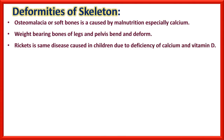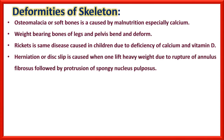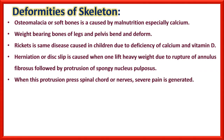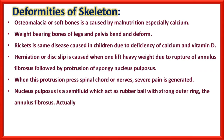Rickets is actually a type of osteomalacia in children. Herniation or disc slip is caused when one lifts heavy weight, due to rupture of annulus fibrosus followed by protrusion of the spongy nucleus pulposus toward the spinal cord or nerves. When this protrusion presses the spinal cord or nerves, severe pain is generated. Nucleus pulposus is a semi-fluid which acts as a rubber ball with a strong outer ring — the annulus fibrosus — which holds successive vertebrae together.